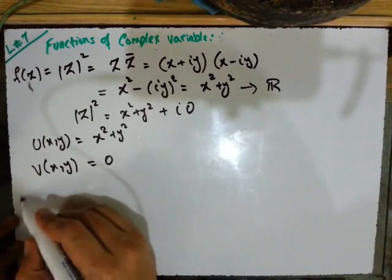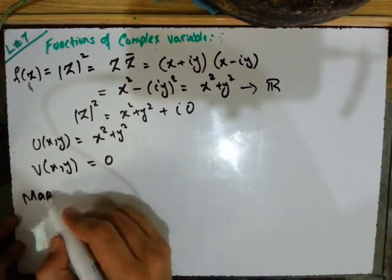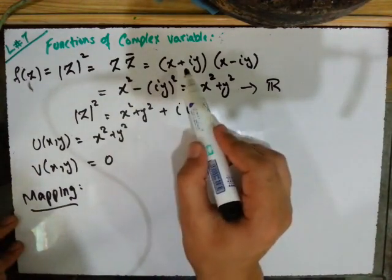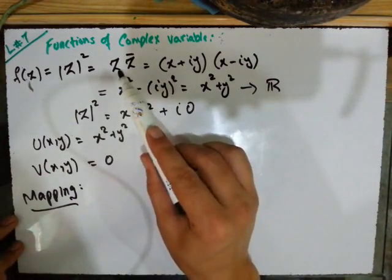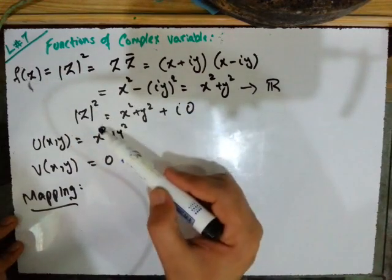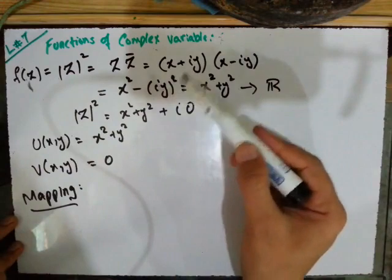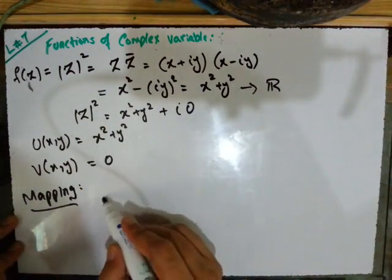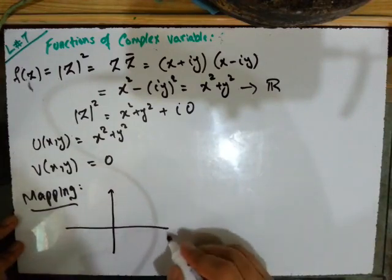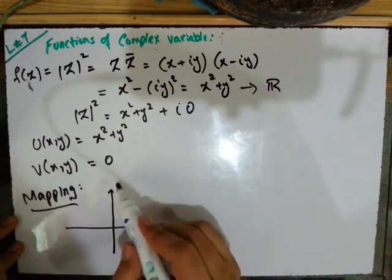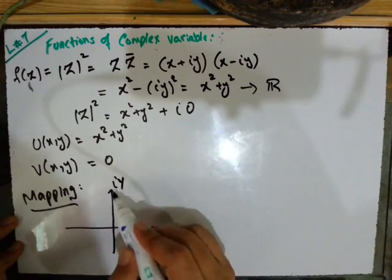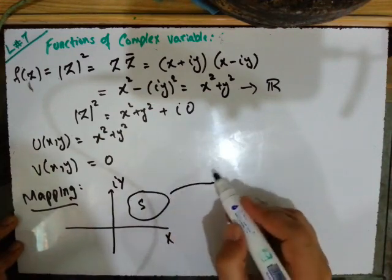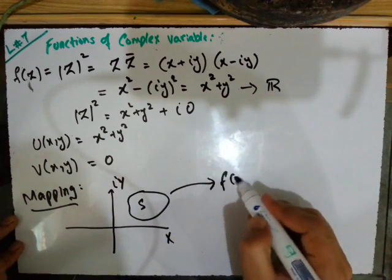Now, mapping — let's discuss mapping. What is happening here is that you have a complex variable given in Cartesian form. When you apply a function on it, that function maps those values. In the complex plane, if we plot this, we have the real axis and imaginary axis.